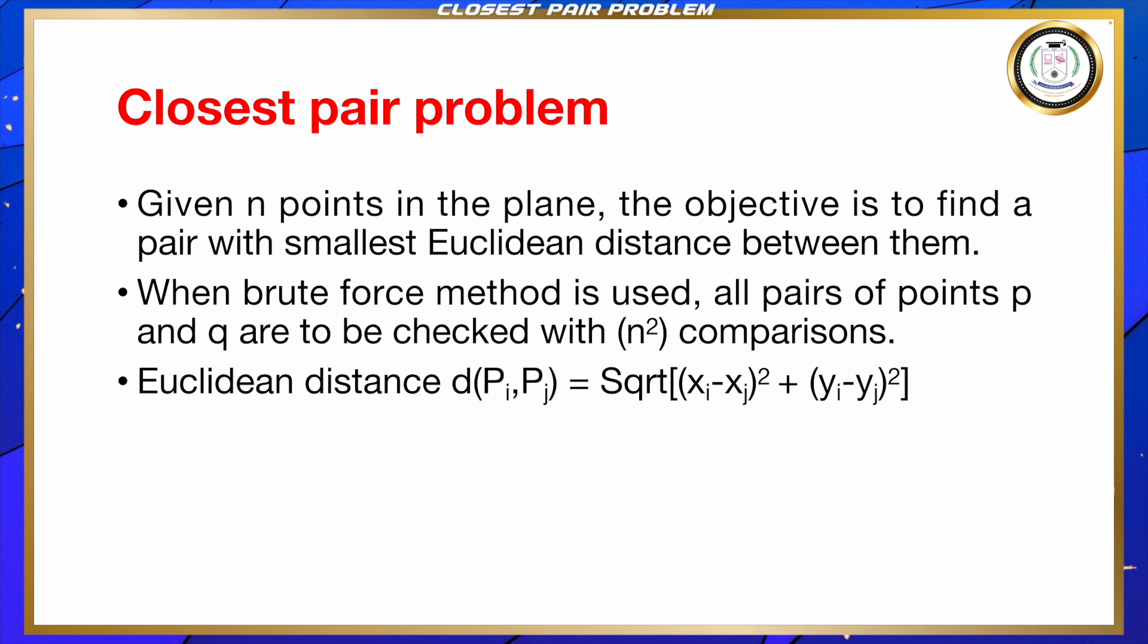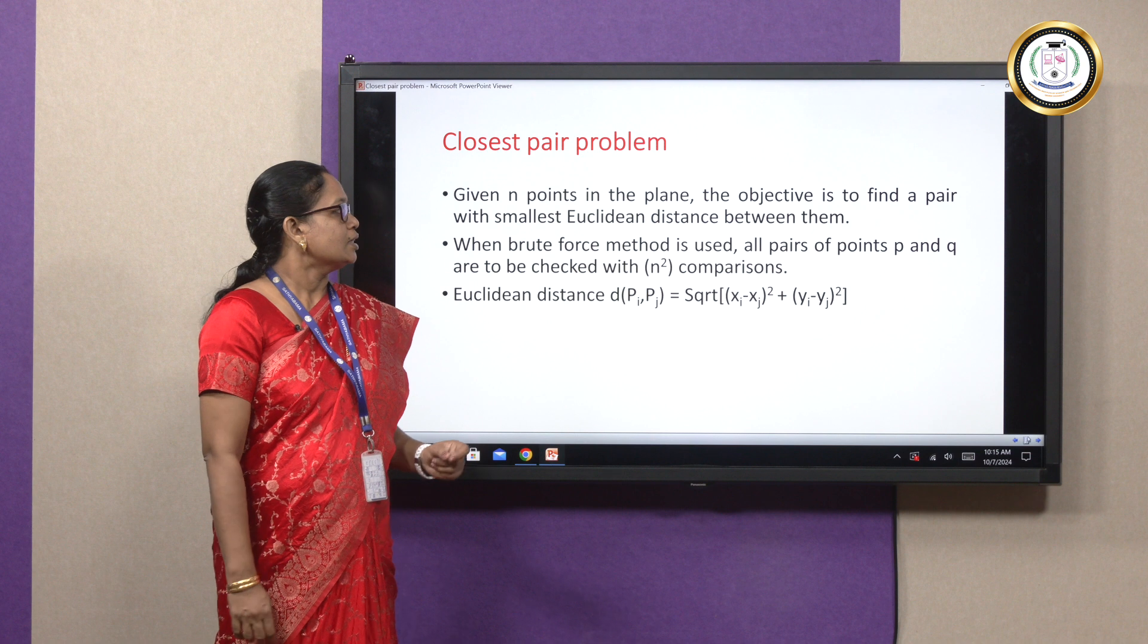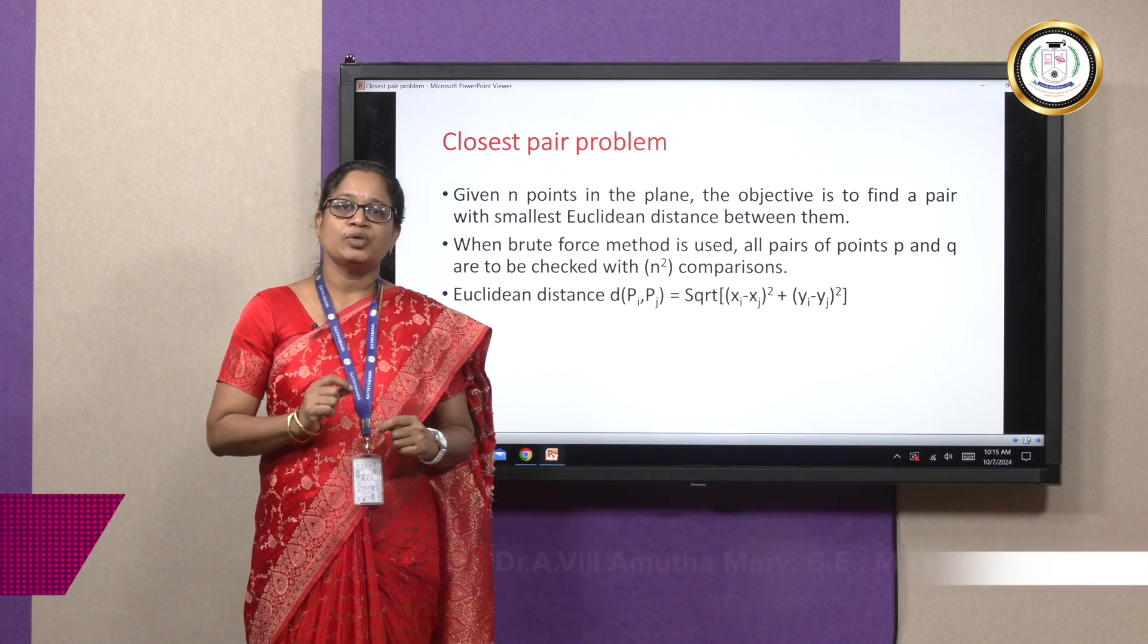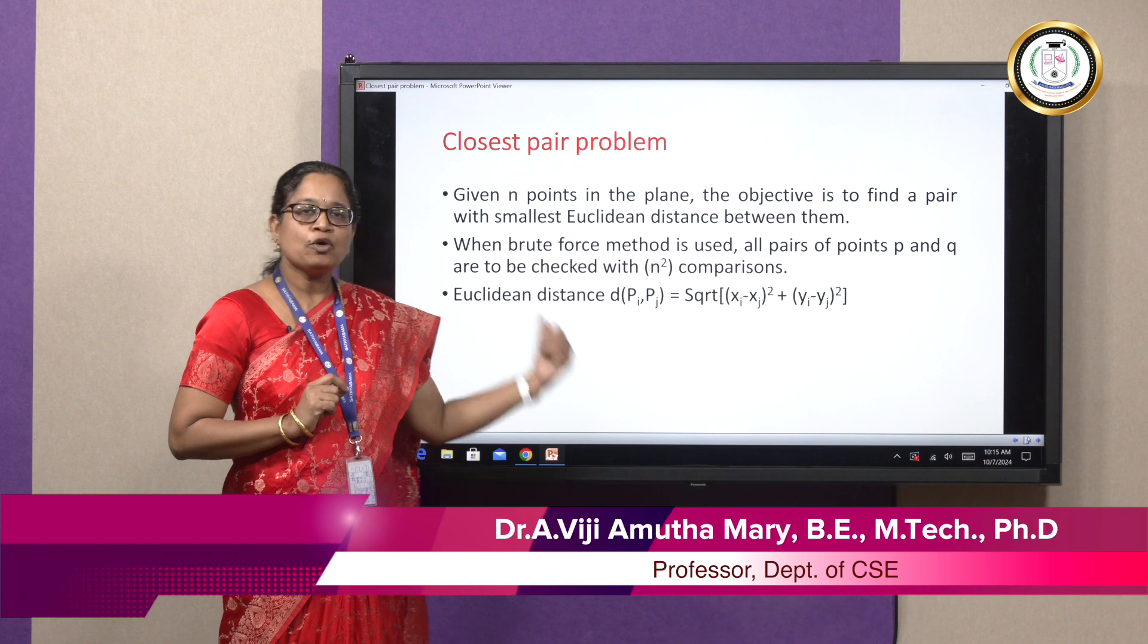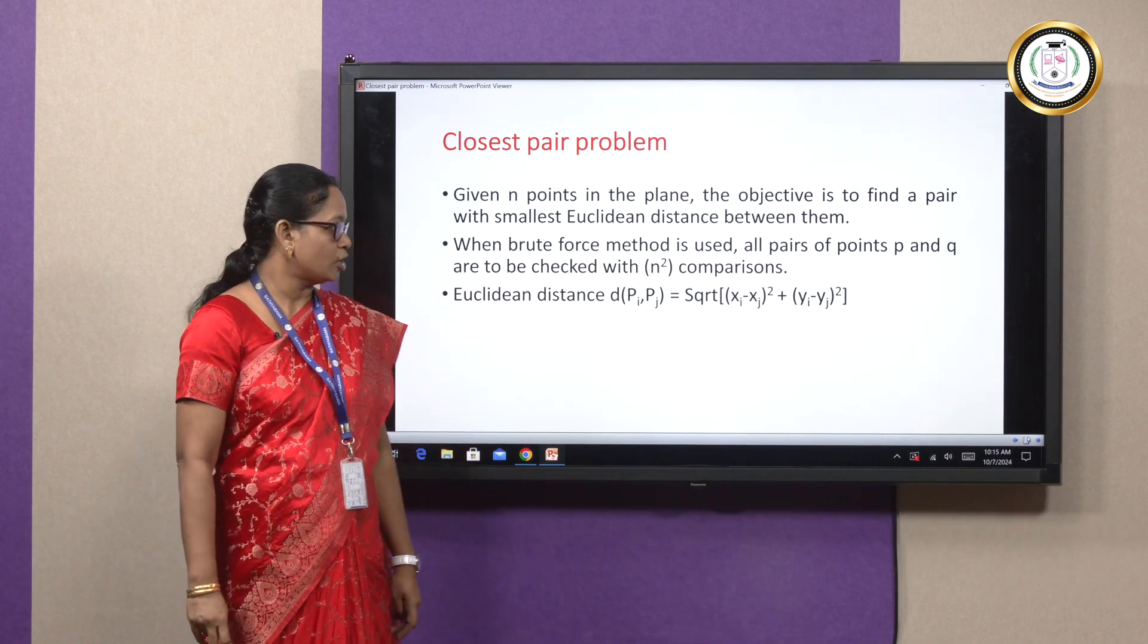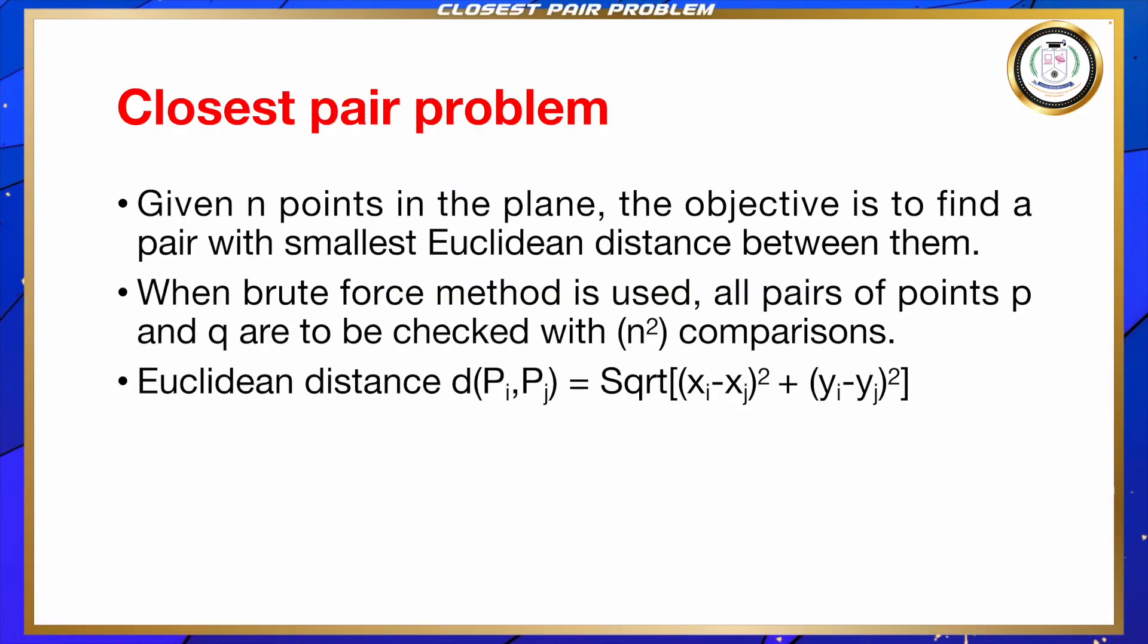This problem we are going to solve by brute force approach. Here, if there are n points given in the plane, the objective is to find a pair with the smallest Euclidean distance between them. The Euclidean distance is found out by using this formula: square root of (xi - xj)² + (yi - yj)².